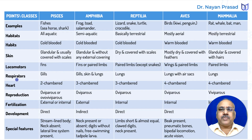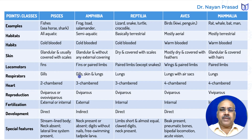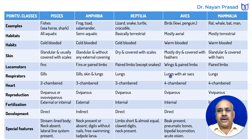Let us see the respiratory structures. Respiration in fishes takes place by gills. In amphibians, larval stages have gills, but in adults they use skin and lungs for respiration. Reptiles are lung breathers. All birds are also lung breathers, but in birds, lungs have additional air sacs. Mammals also respire by lungs.